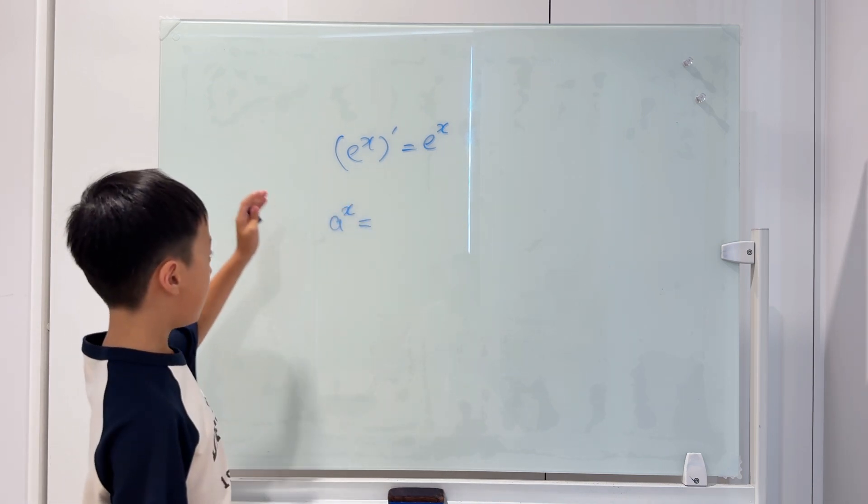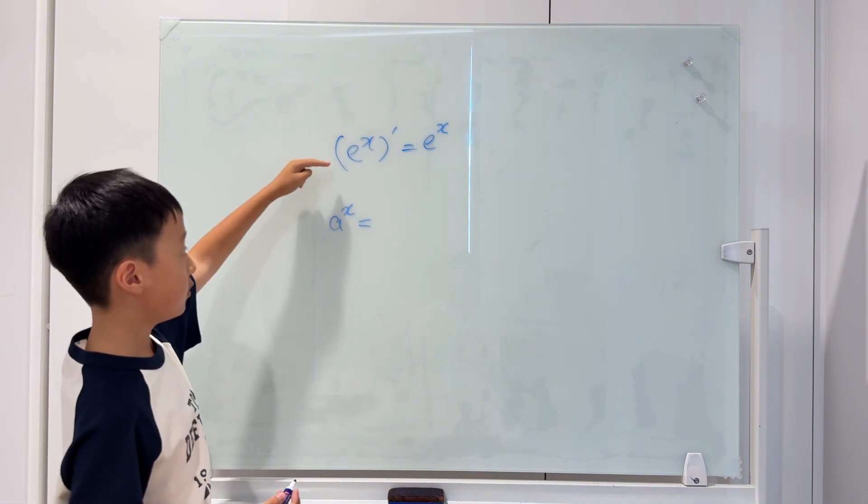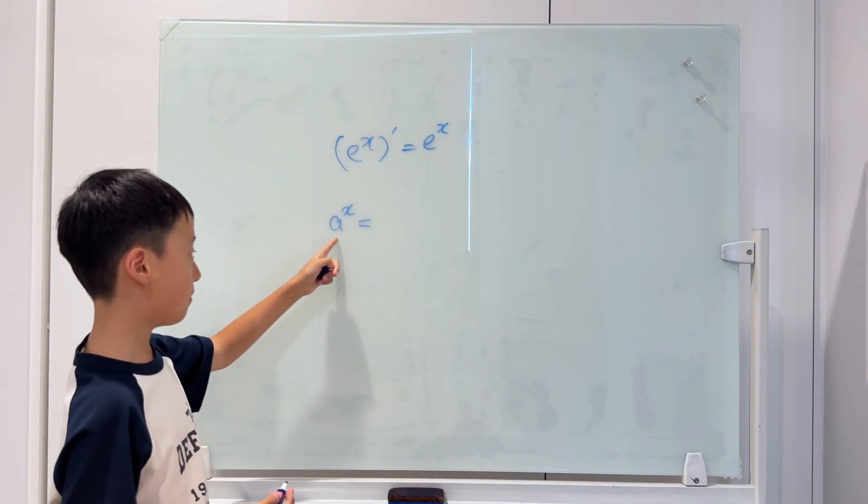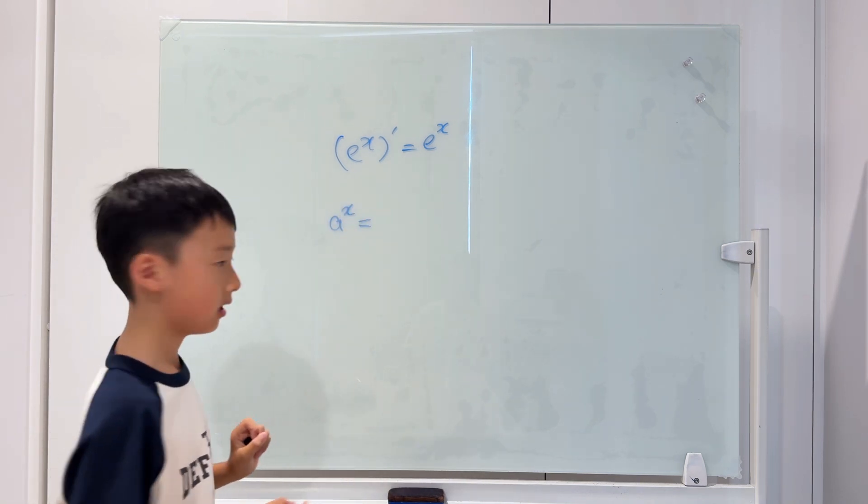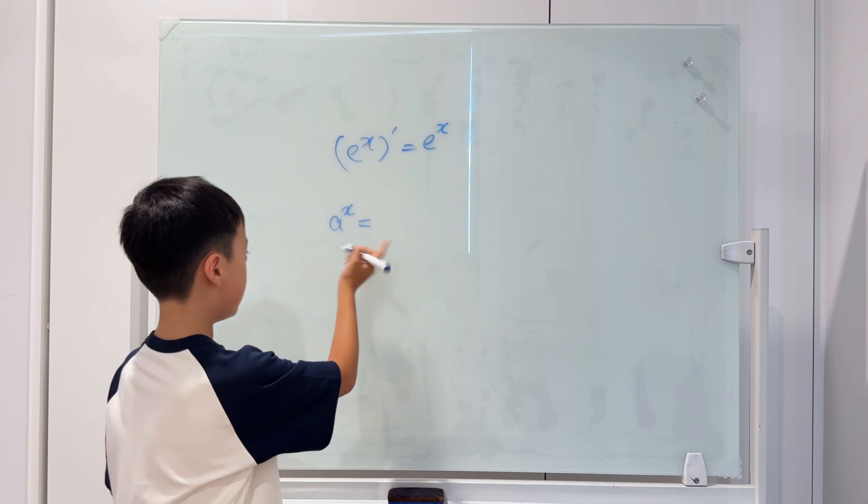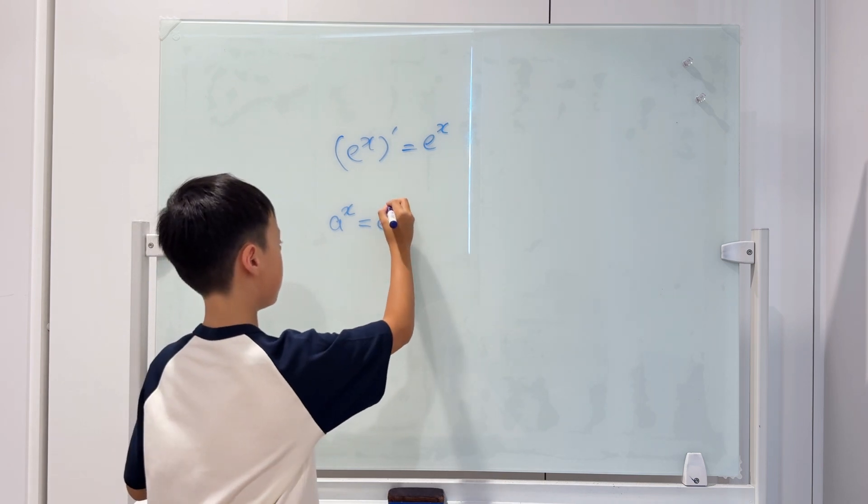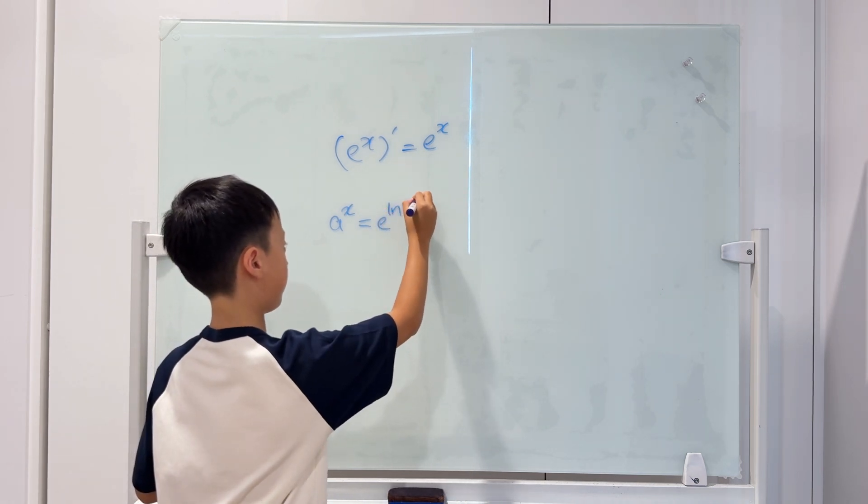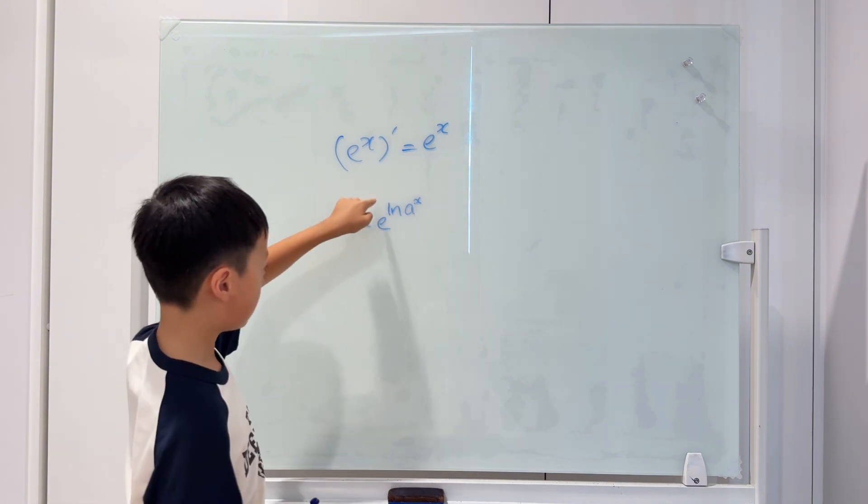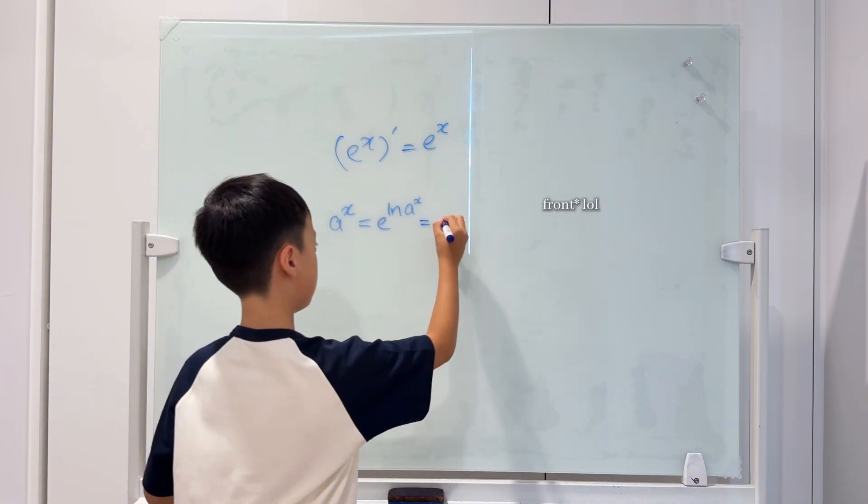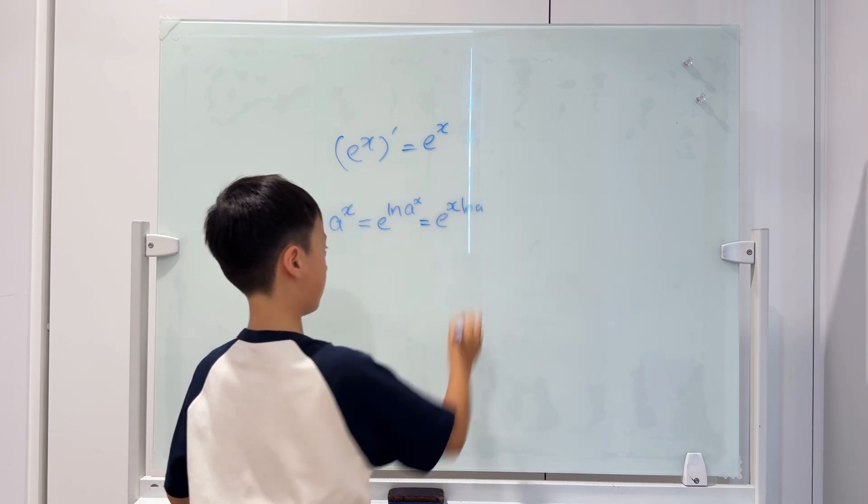Since we figured this out, we have to make this into base e, because then it will become easy. We all know that anything can change into e to the power of the log of that thing. Using a log property, we can put this x to the back.